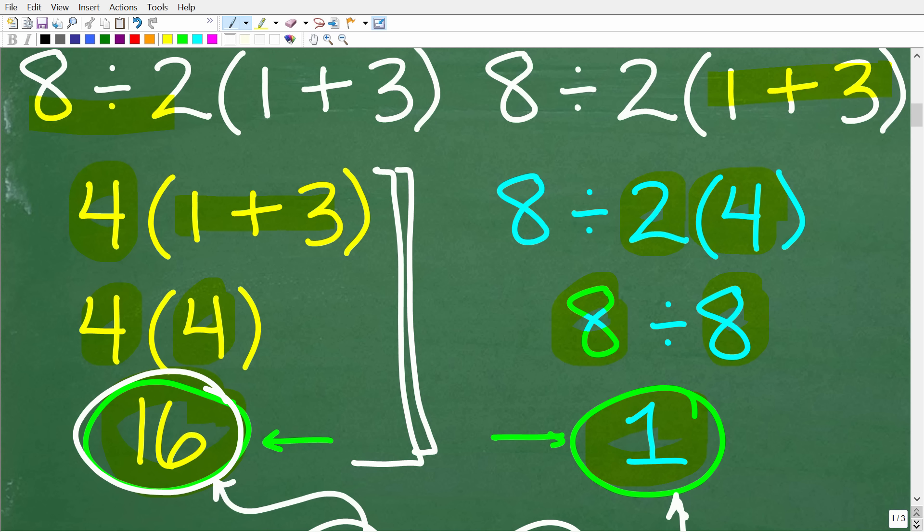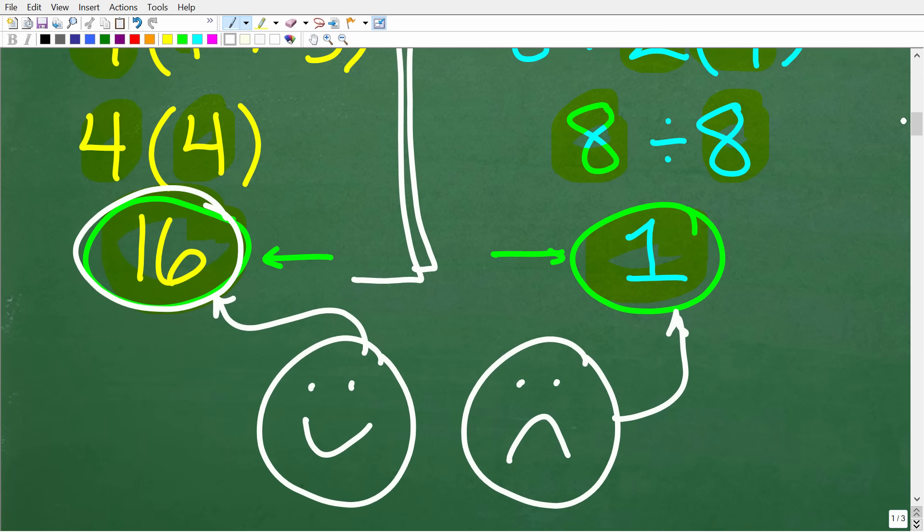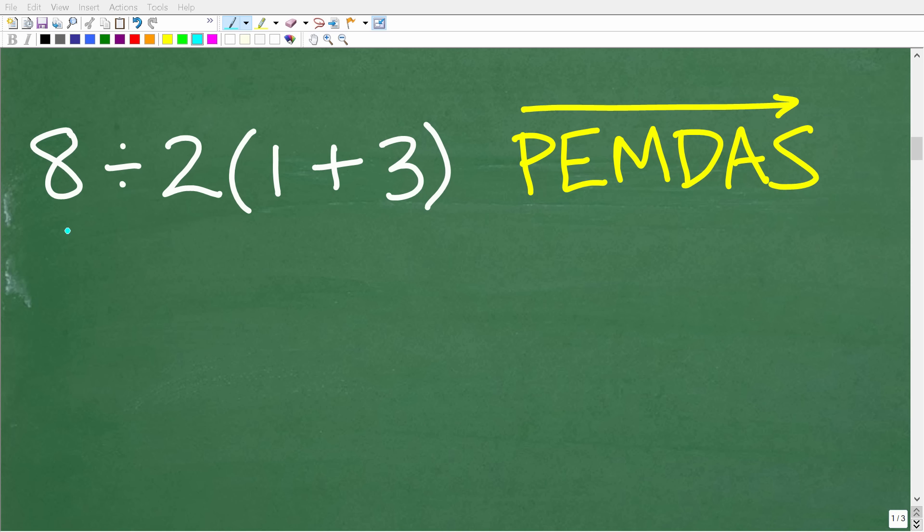Now 1 could very well be the most common wrong answer, and I'll explain why this is wrong in just one second. But anyways, don't feel so bad if you got 1 as your answer. So let's go ahead and explain exactly why 16 is the correct solution. So the number one reason why people will either get this problem right or wrong has to do with something called the order of operations.